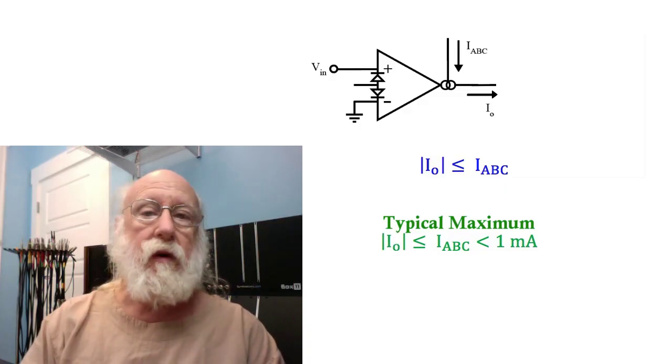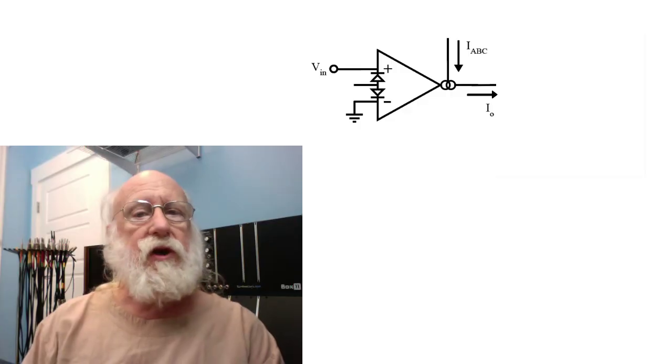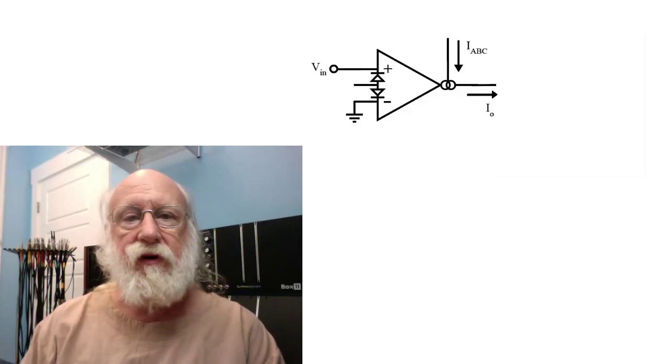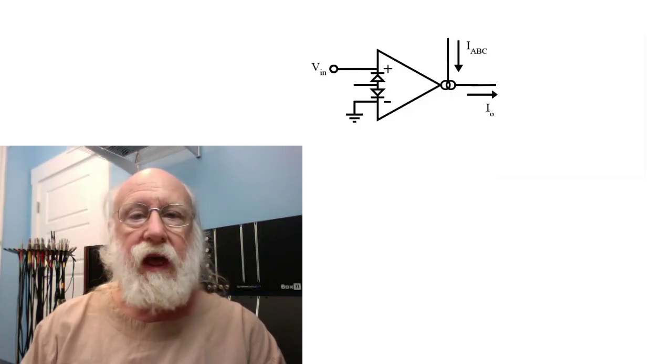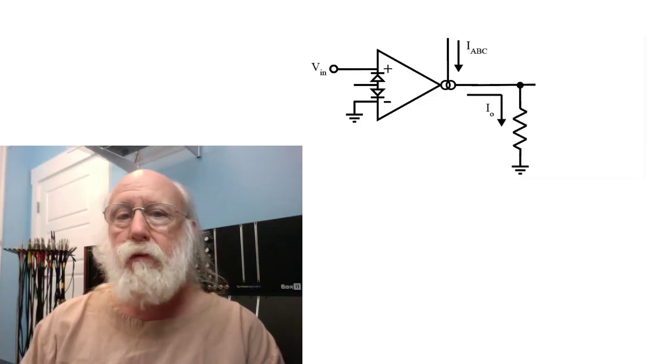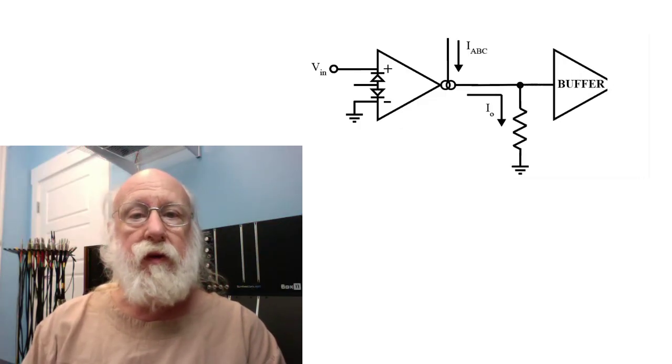The first three schemes that we look at for doing this current to voltage conversion are all basically the same. You take that current from the output, you run it through a resistor, and then you buffer the voltage on the resistor.